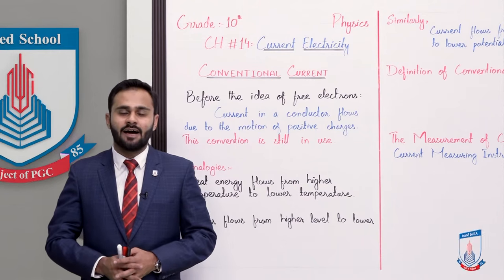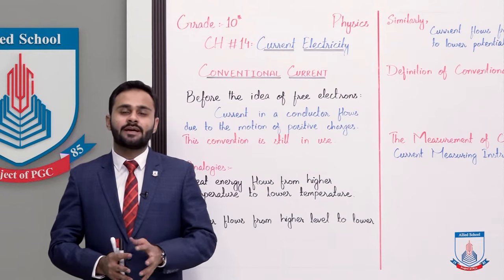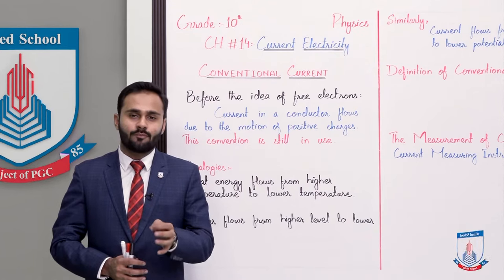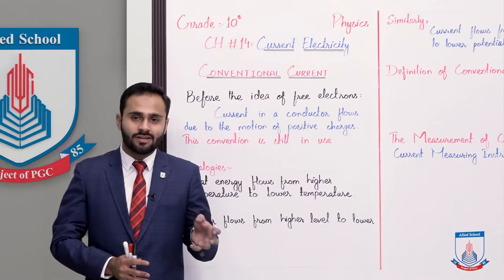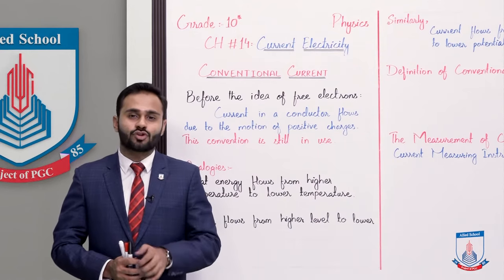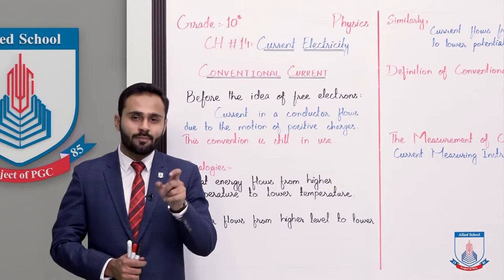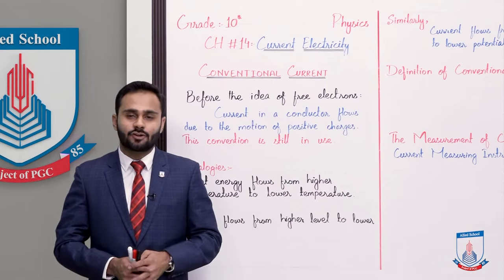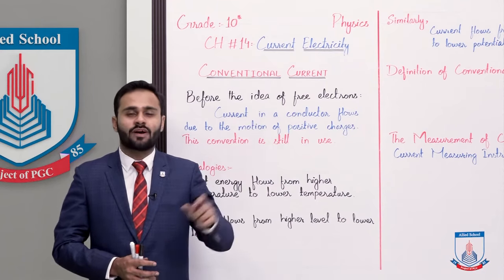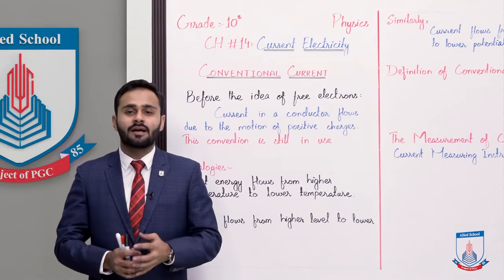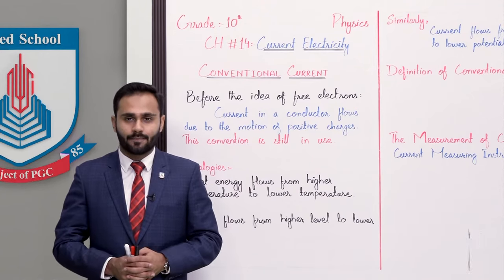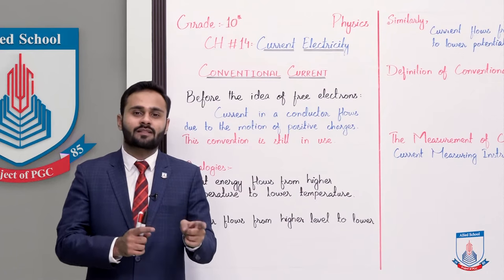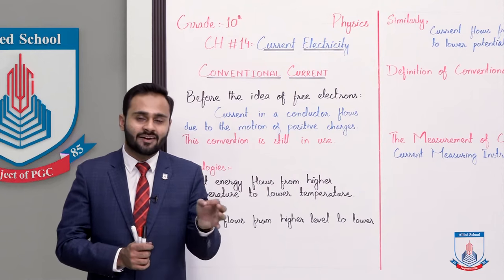So what is conventional current? In the last lecture we studied that current in the metal case flows due to the movement of electrons. Electrons with the nucleus have a very weak force of attraction — their bonding is very weak. So in an external field, these electrons start to move in a direction, and we can say that there is current flow. So we have said that in metal cases, current flows due to the motion of free electrons.